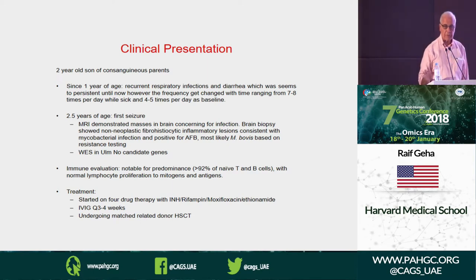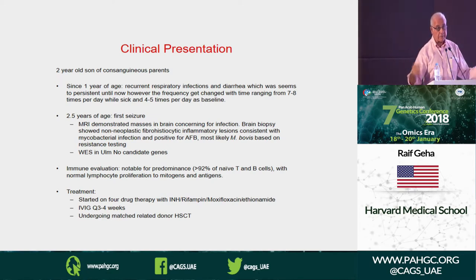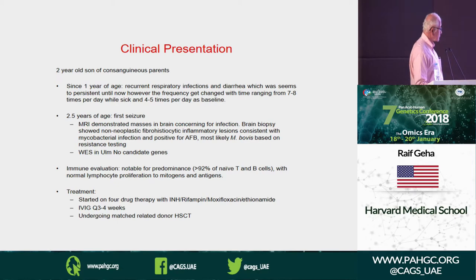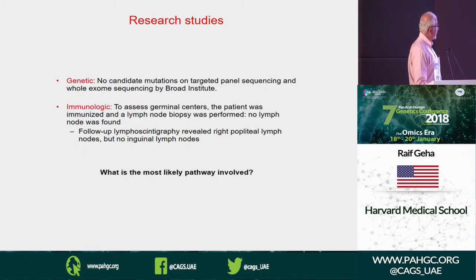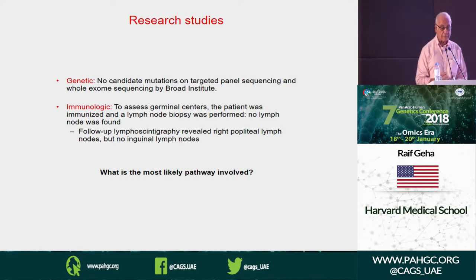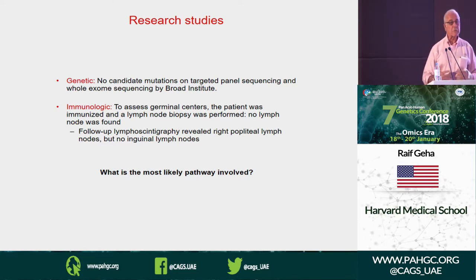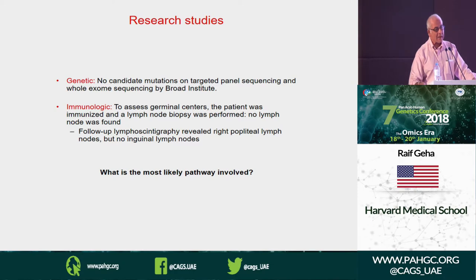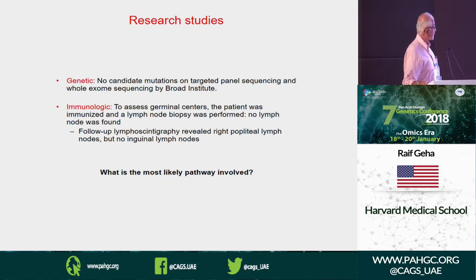The patient had been seen before in Germany by my colleague Klaus Schwarz, who did whole exome sequencing — nothing fit. He thought it was JAK1 but it wasn't. We had a collaboration with Merck, who offered to do 100 whole exomes for free through the Broad Institute. We sent it there — but the Broad reported no significant mutations. In desperation, we decided to do something old-fashioned: immunize the child with a booster antigen and biopsy the lymph node 10 days later to see whether he makes plasma cells.